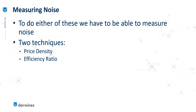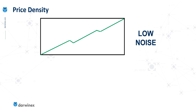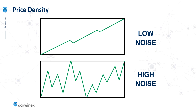In this series I'm going to cover two techniques. The first is called price density, and the second is the efficiency ratio. In this episode I'm going to concentrate on price density. To understand this, it helps to think of the price action being confined to a box. With relatively low noise, the price action might look like this, whereas when this asset is particularly noisy, it might look something more like this. Notice that the net price move — where the price starts and where the price ends — is identical in both scenarios. The only difference is that when we experience high levels of noise, the price action fills the box more effectively than when we have low noise. It's using that principle by which we measure the noise using price density.